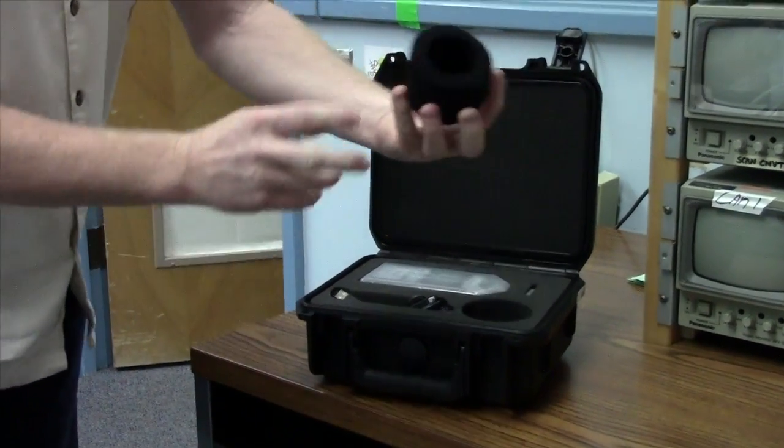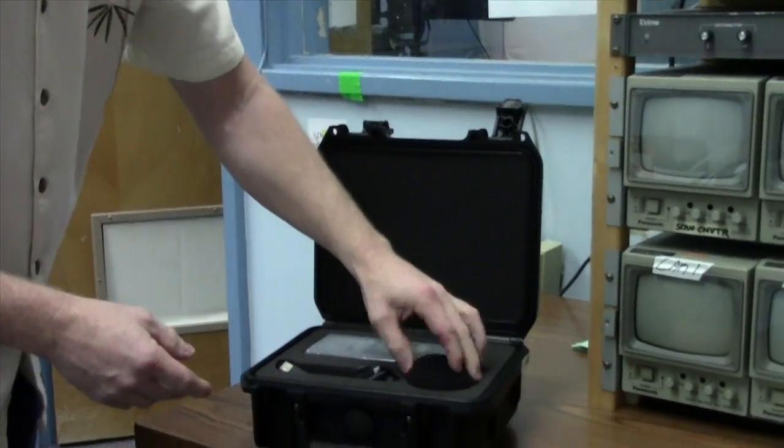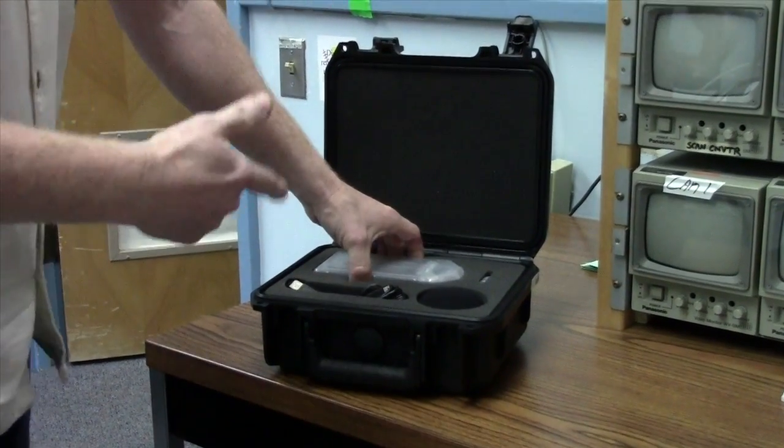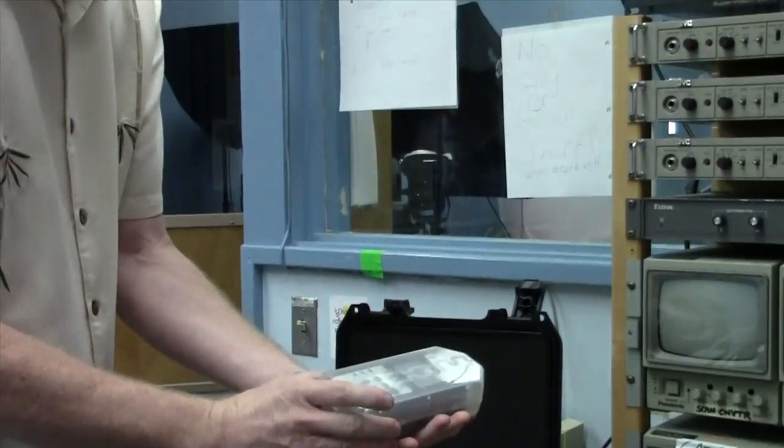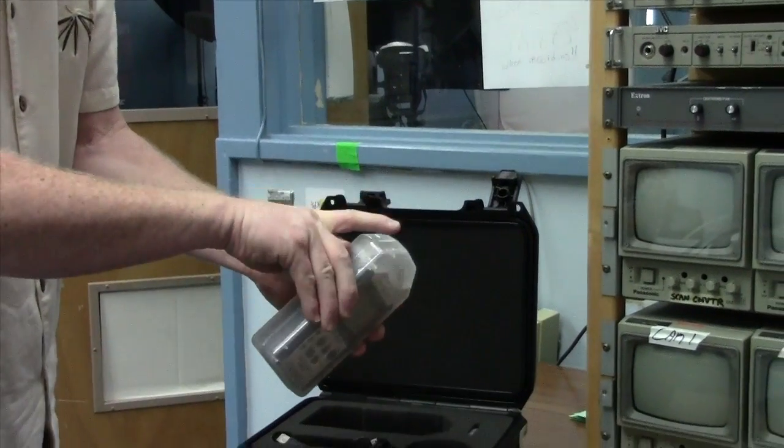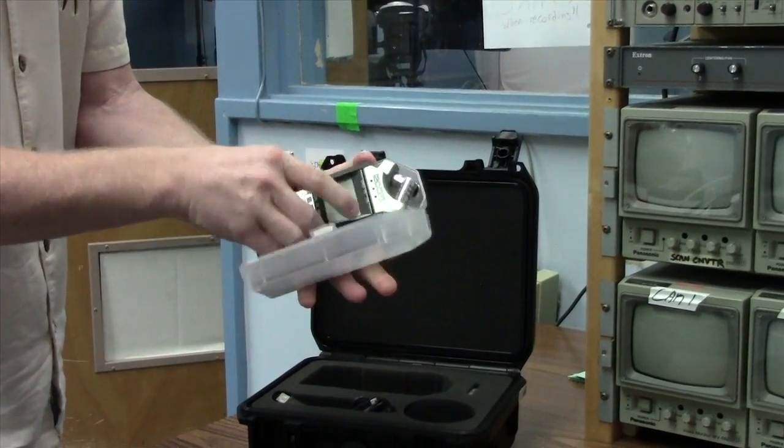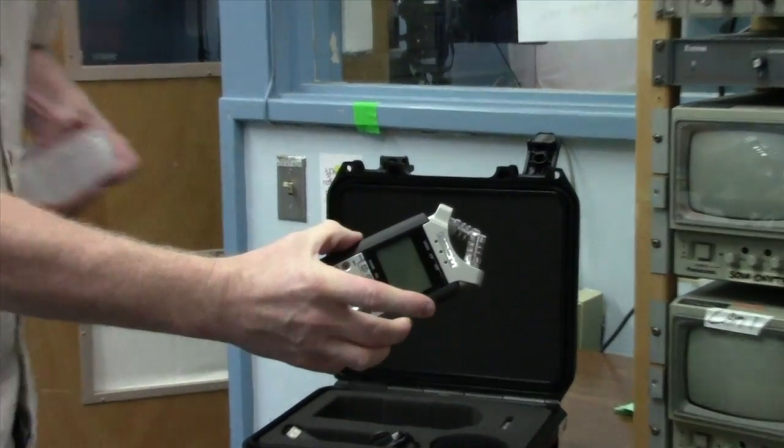It has a windscreen for it tucked in right here and that just stays in. Normally we won't be using that unless you're out in the field recording something. There's also the H4N itself in a clear box. That has a little latch and opens up and there's the H4N audio recorder.